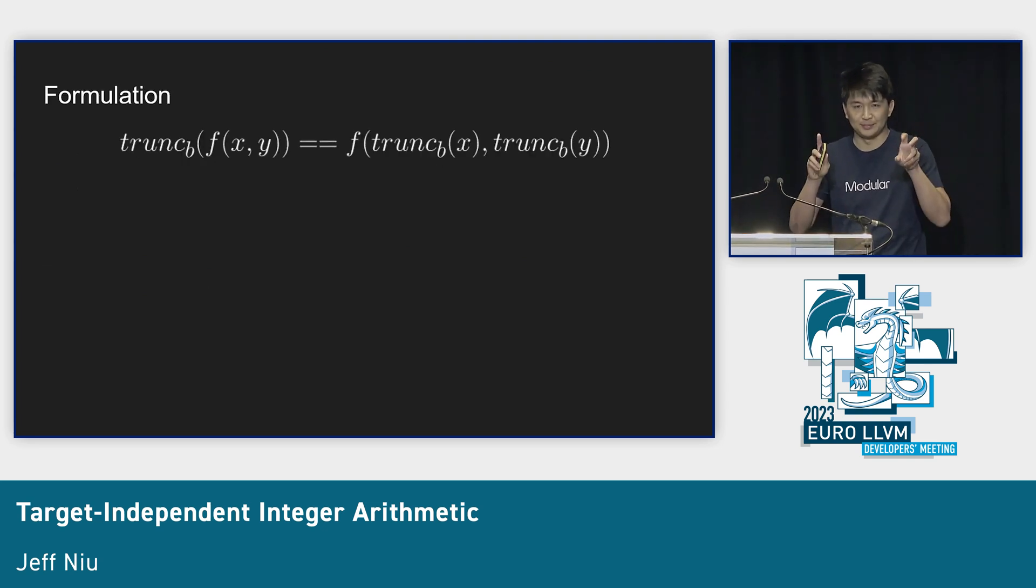What we really get is an equation: if we compute this operation at arbitrary precision width and truncate the result to a particular bit width, this equals the same result as computing it with truncated inputs. If operation f satisfies this property, we can always hold it for constant propagation.